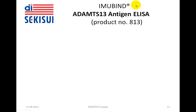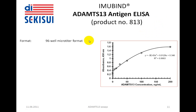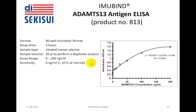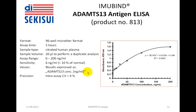The next product is from the Immubind series: an ADAMS-13 antigen ELISA, product number 813. It is an ELISA in the 96-well microtiter format. The assay time is 5 hours, and the sample type is citrated human plasma. Again, 20 microliters are needed to perform a duplicate analysis. The assay range is from 0 to 200 nanograms per ml, with a sensitivity level of 6 nanograms per ml, which is about 10% of normal. Results are expressed as ADAMS-13 concentration in nanograms per ml. Intra-assay variation is 4% and inter-assay variation is 7.3%. This test is also CE marked.